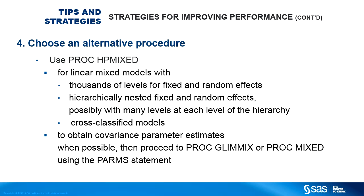You might consider using a high-performance procedure. PROC HPMIXED uses the sparse matrix technique and works especially well for mixed models with thousands of levels for fixed and/or random effects. It also runs faster for hierarchically nested models and cross-classified models where many levels exist for each level of hierarchy. However, PROC HPMIXED has a limited number of statements and options. You can sometimes overcome this by running PROC HPMIXED first, obtaining the covariance parameter estimates, and then using PROC MIXED with the PARMS statement and the known covariance parameters from PROC HPMIXED to perform post-fitting analyses.